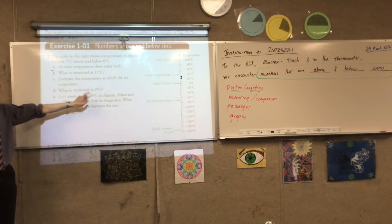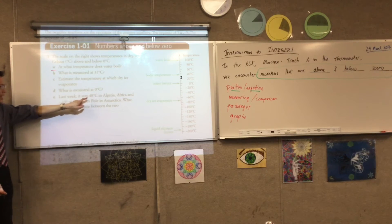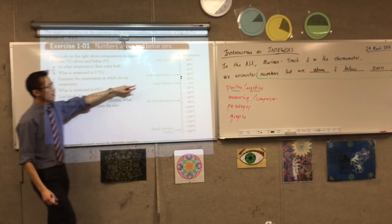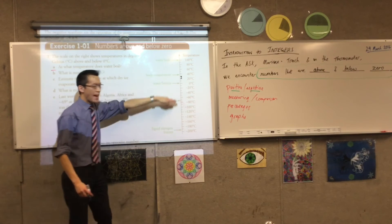So if I want to know the difference between 48 and negative 69, I want to know, well, how far up do I have to go? And how far down?